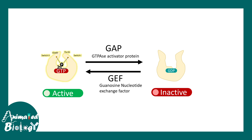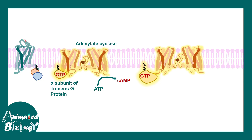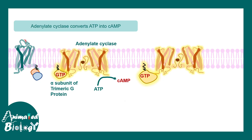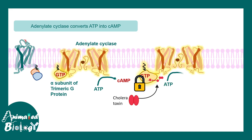What the cholera toxin does is ADP-ribosylate the G-alpha subunit. As a result of this ADP ribosylation, it is locked in a GTP-bound active configuration. Since it is locked in this configuration, adenylate cyclase is constitutively active for a prolonged duration.